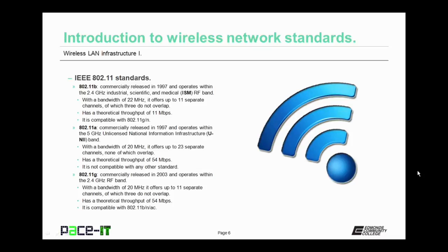802.11g was commercially released in 2003 and operates within the 2.4 gigahertz radio frequency band, just like 802.11b. It also offers a bandwidth of 20 megahertz on 11 separate channels. It has a theoretical throughput of 54 megabits per second, and it's compatible with 802.11b, 802.11n, and 802.11ac.